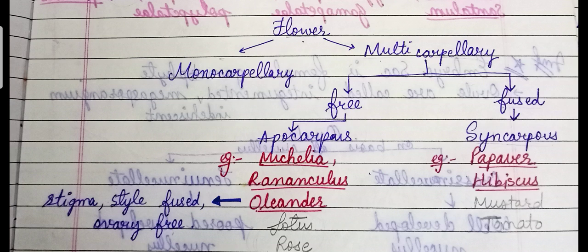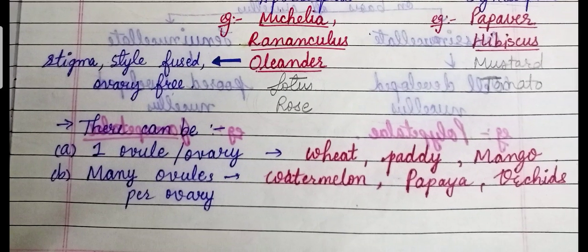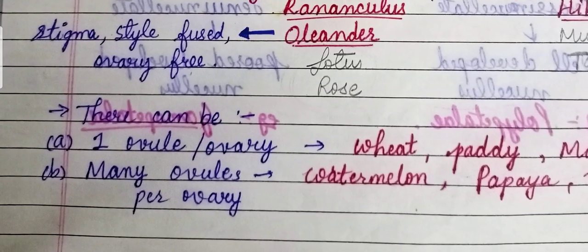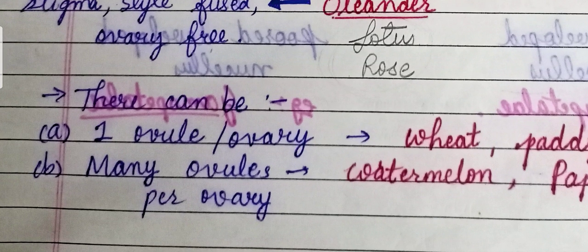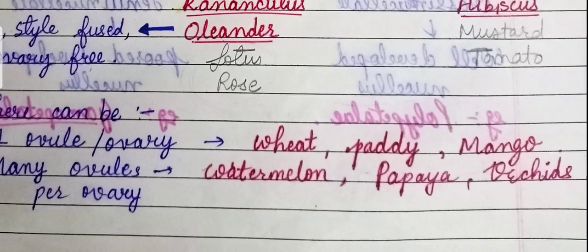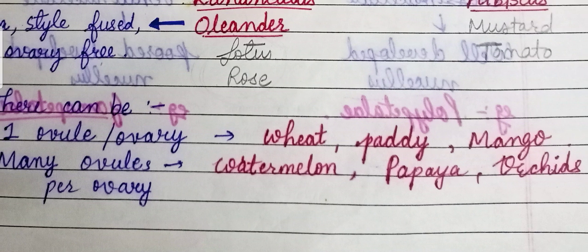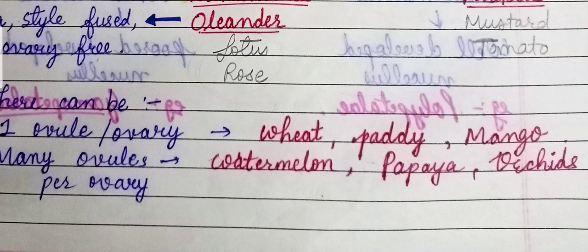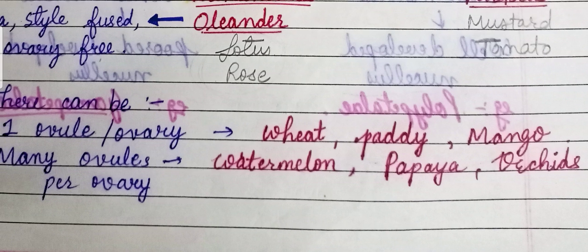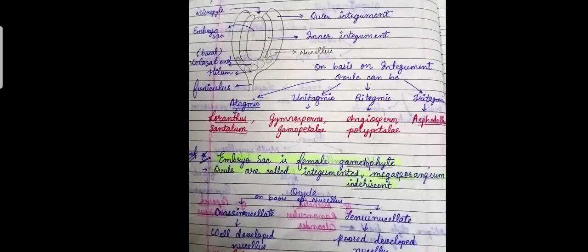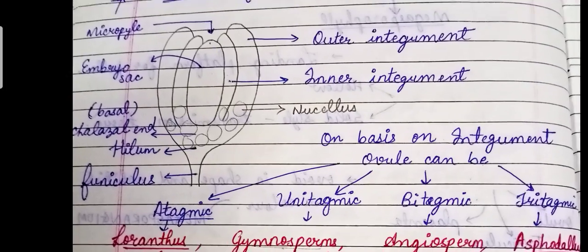There can be one ovule within the ovary — examples are Wheat, Paddy, and Mango. Many ovules may also be present per ovary — examples include Watermelon, Papaya, and Orchids.